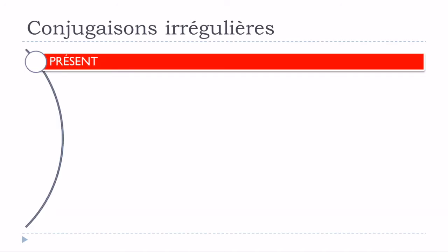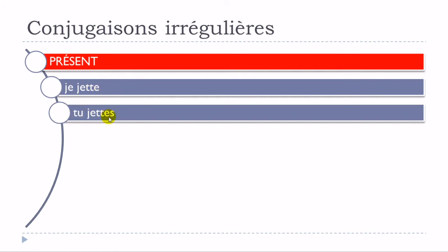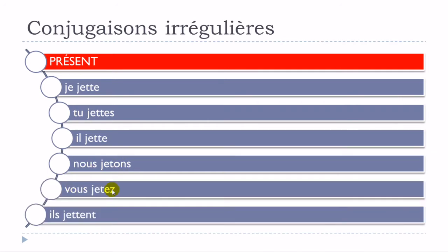Let's see right away what these changes are for the present form. It goes: je jette, tu jettes, il jette, nous jetons, vous jetez, and then ils jettent. What we can see here is that je, tu, il, and ils will be affected by these changes. The only change you will have to make is that you will have to double the T.